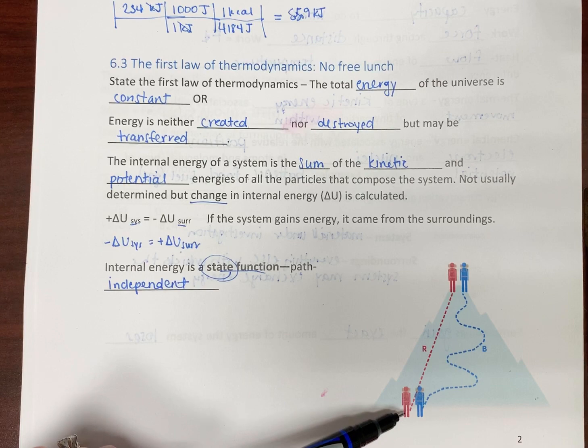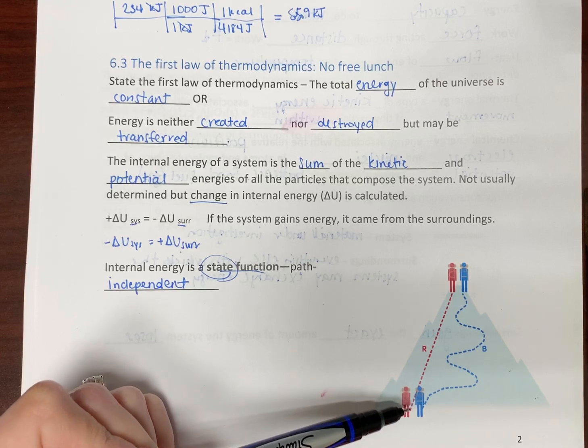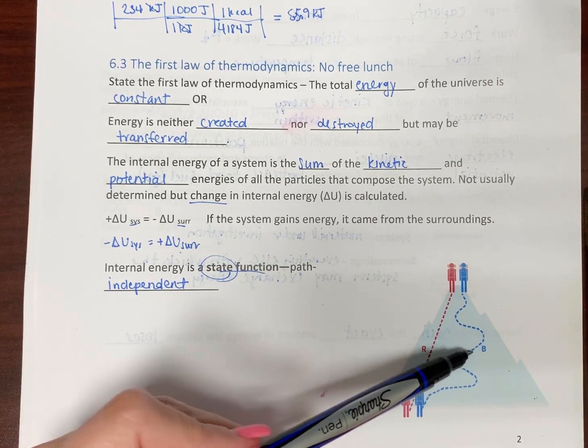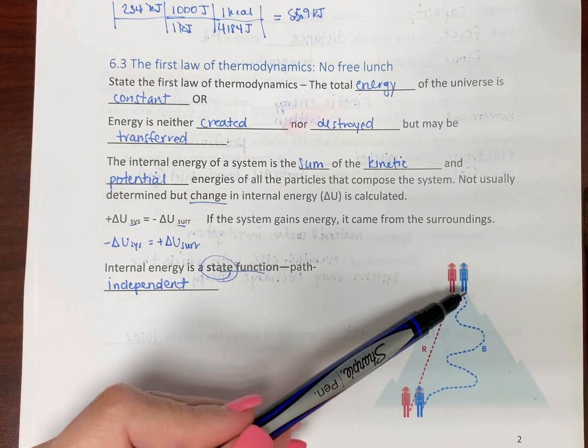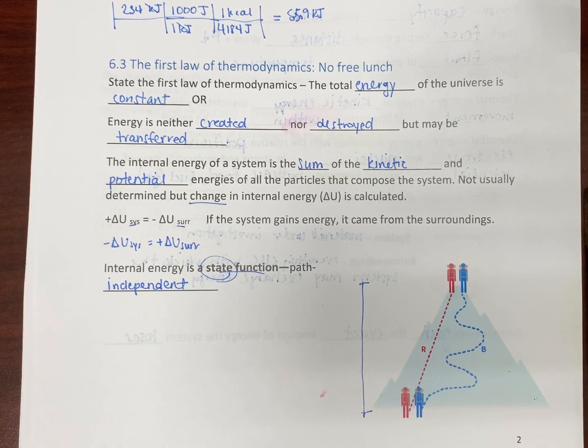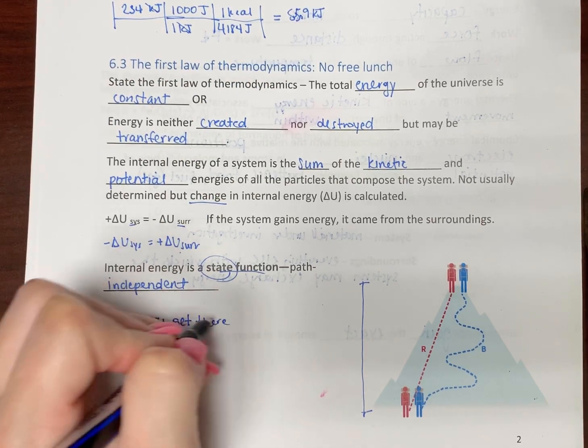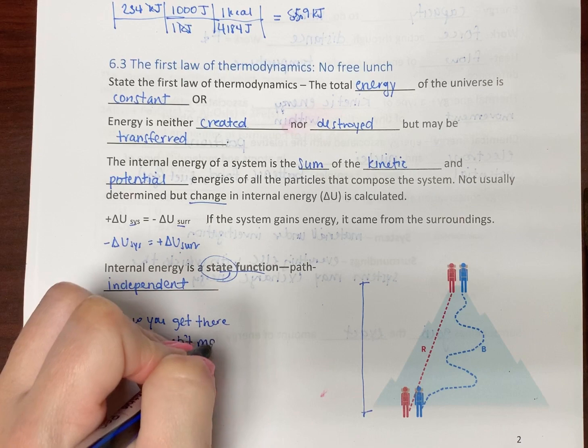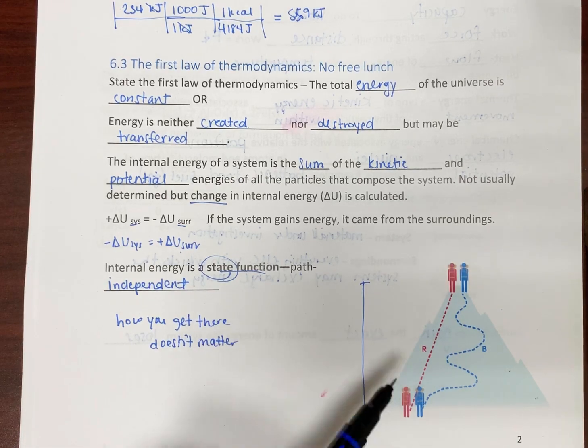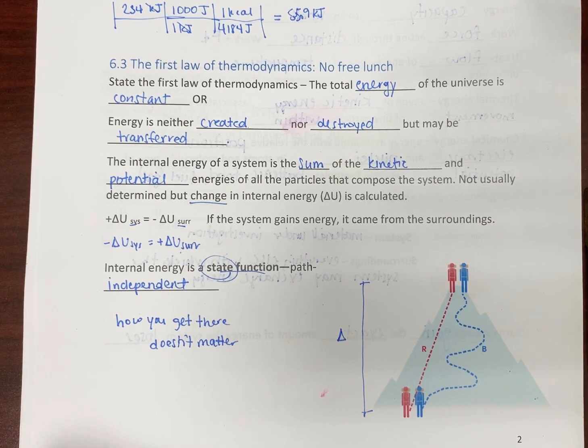It does not matter how you get there. So, in this little drawing here, all that matters is the people who are at the bottom and the people who are at the top. It doesn't matter if the red line, somebody took the direct path, or the blue line, they took the traverse and came up a longer way. That doesn't matter. The only difference is the change. How you get there doesn't matter. So, path independent. How you get there doesn't matter. And the time doesn't matter. The pathway doesn't matter. It's just the difference. So, this is the change. That's what a state function is.